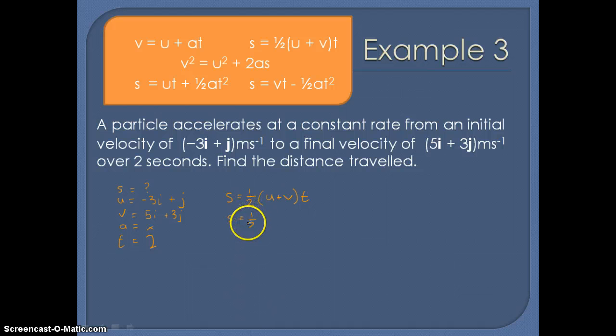So again substitute in values. Minus 3i plus j. V is plus 5i plus 3j multiplied by T which is 2. So we need to simplify the problem. Now you may spot that we've got times by half and times by 2. So we could consider they just cancel out. Then minus 3i plus 5i would be plus 2i. And j plus 3j would be plus 4j. So that's our displacement.